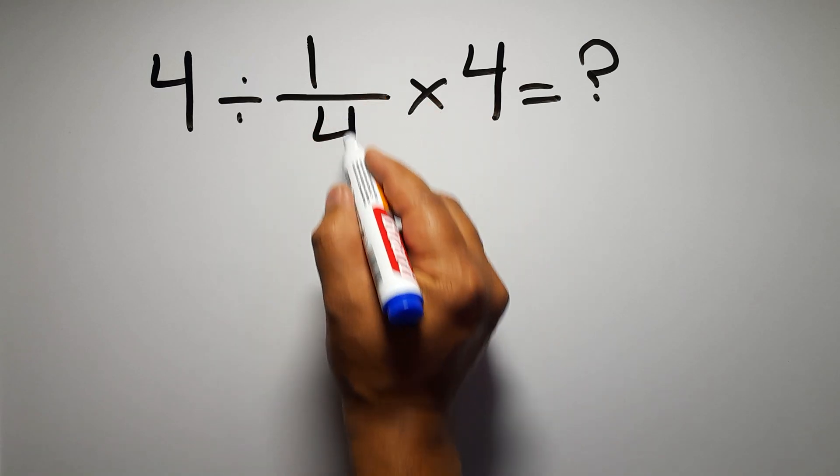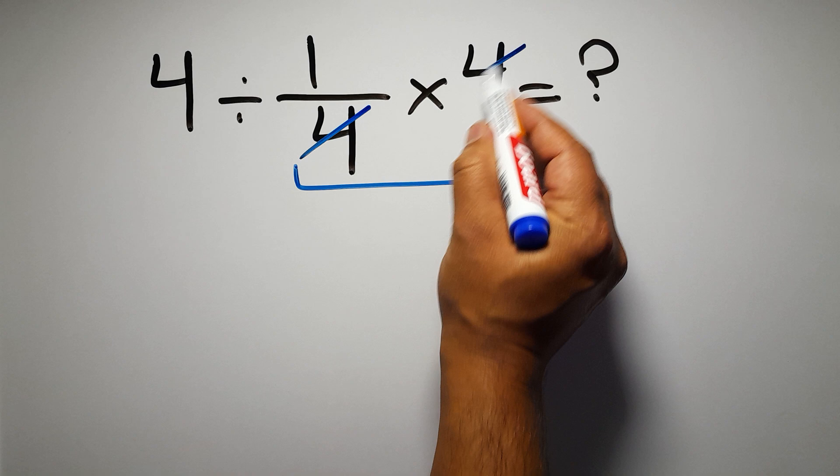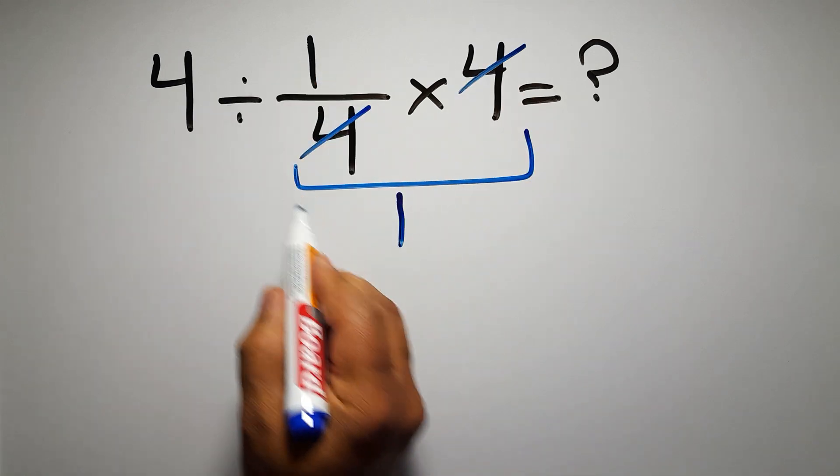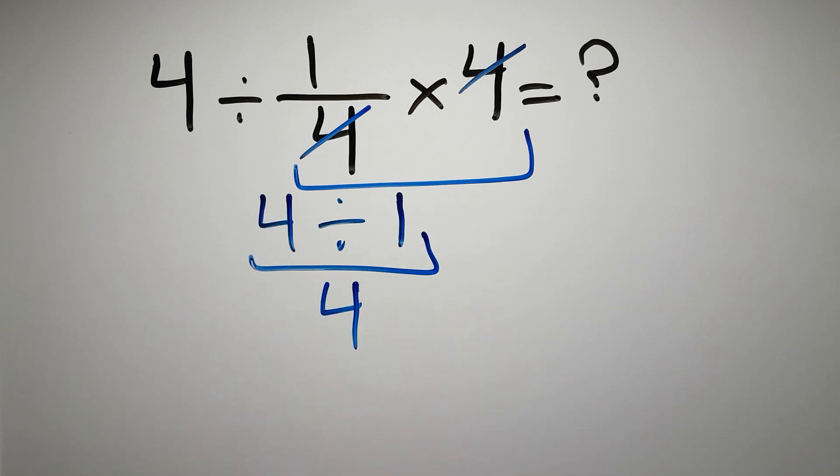First we do this multiplication, one over four times four. We can easily cancel this four and this four, so here we have just one, and four divided by one gives us four. But this answer is not correct because...